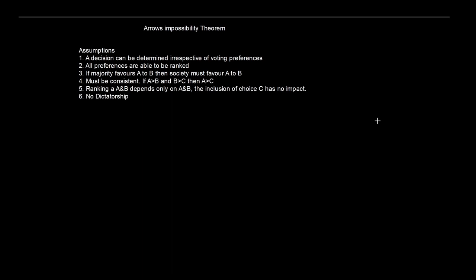Finally, option six: we make the assumption of no dictatorship. If it were a dictatorship, we wouldn't have to go through this whole ideal of trying to determine social preferences — the dictator could just say this is your social preference, this is what we're going to do. We only need to worry about determining social preferences if we're in a democratic state and want to figure out what all our constituents' preferences are.